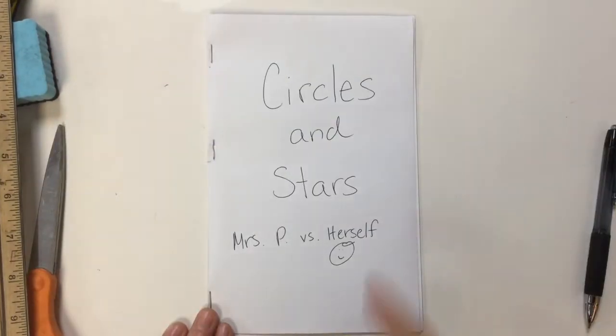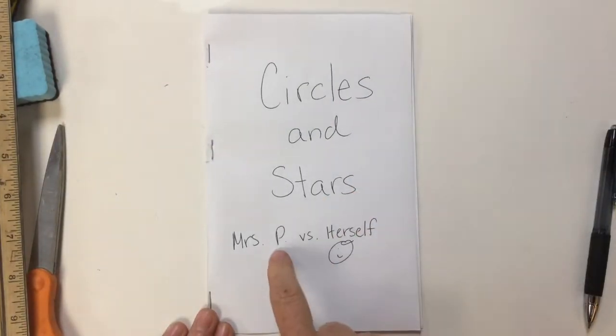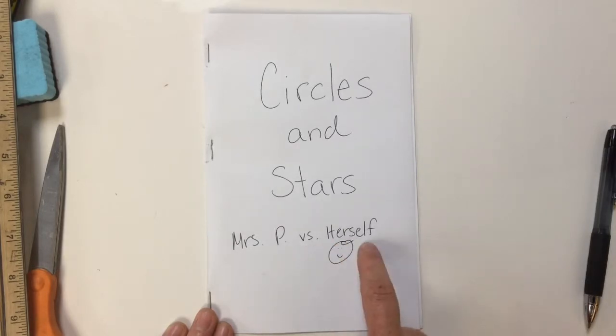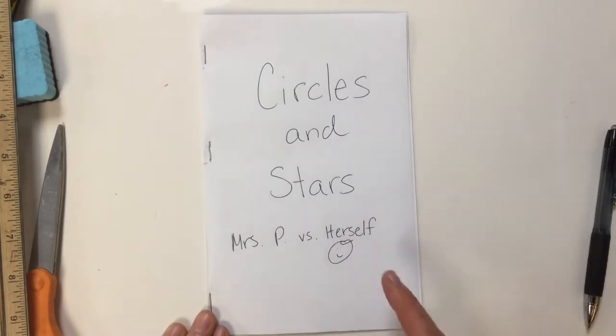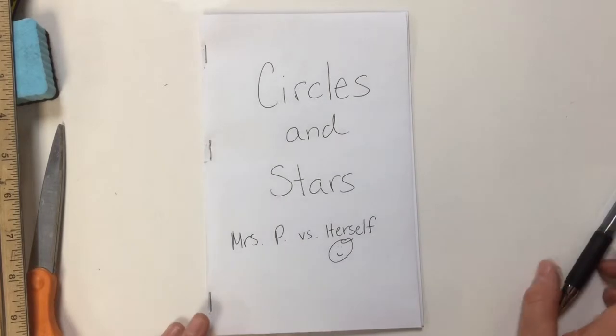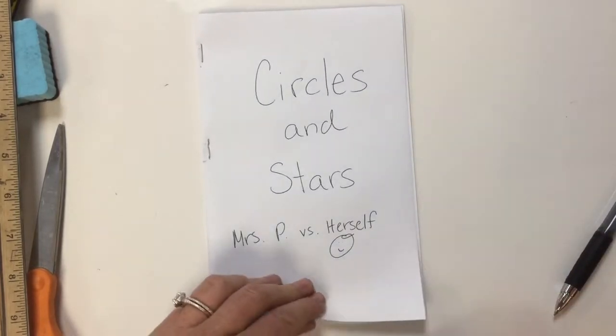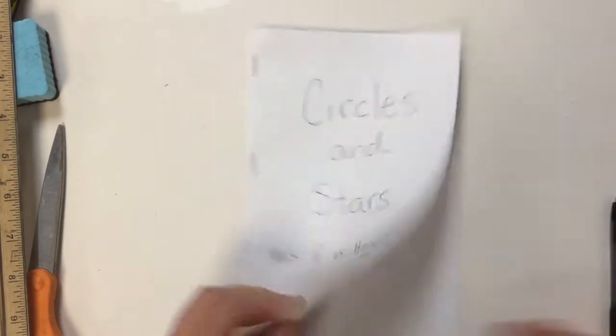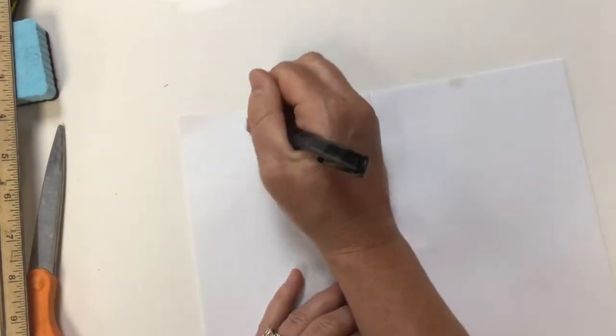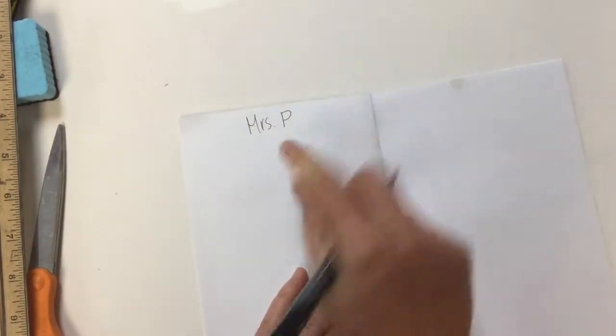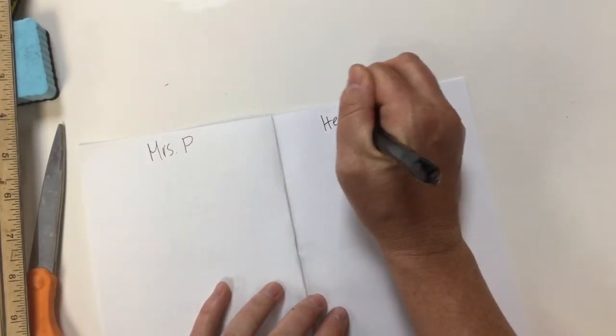Once you've stapled your book you can write the title of the game, who you are, and who you're playing. For the sake of this I'm just playing myself. So then what you do is you decide who's going to go first and then you open your booklet and whoever's going first you write your name at the top of the left side of the paper and whoever's going second is on the other side.